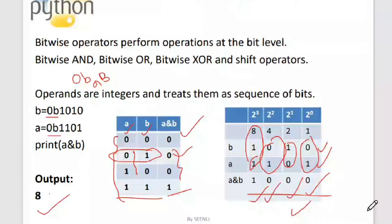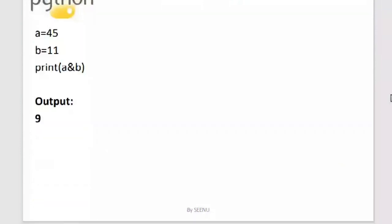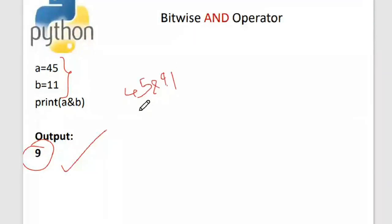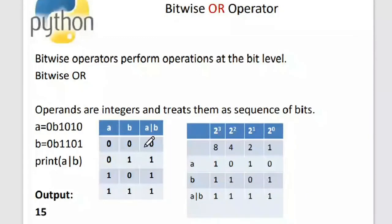In the program I've given decimal literals directly — internally 45 is converted to binary and 11 is converted to binary, then the AND operation is performed. The result of 45 AND 11 is 9. Next is the bitwise OR operation, also performed at the bit level. The OR truth table states: if both bits are zero the result is zero; if any one bit is one, the result is one.